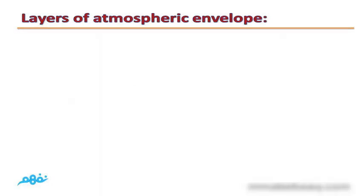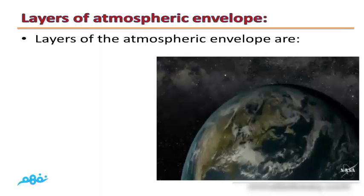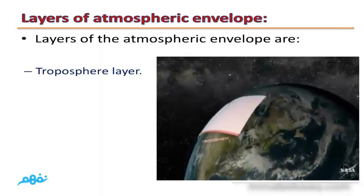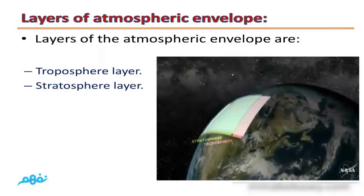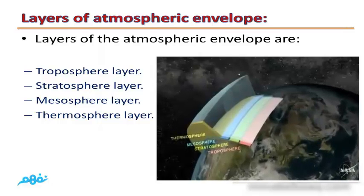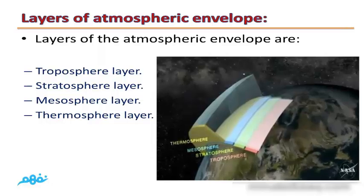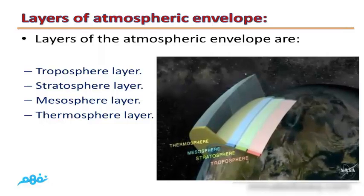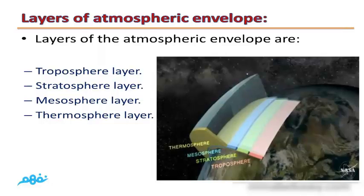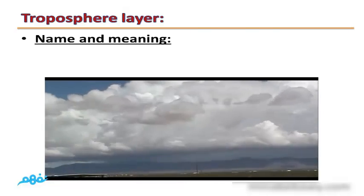The layers of the atmospheric envelope are: Troposphere, Stratosphere, Mesosphere, and Thermosphere. The atmospheric envelope consists of these four layers. Let's talk about the Troposphere.